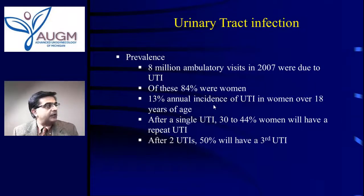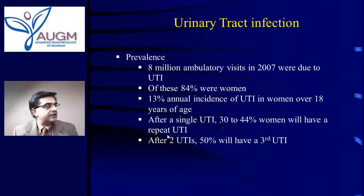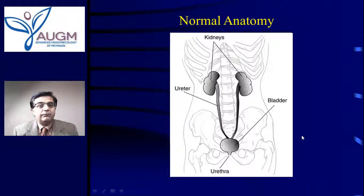There's a 13% annual incidence of bladder infections in women over the age of 18 years. After a single episode of a urinary tract infection, 30 to 44% — over a third of women — will have a second infection. And after two infections, over half of the women will have a third bladder infection. That is a very, very common problem.